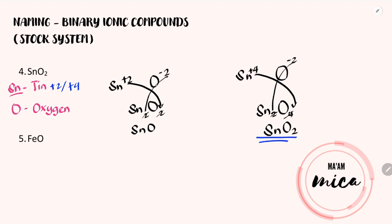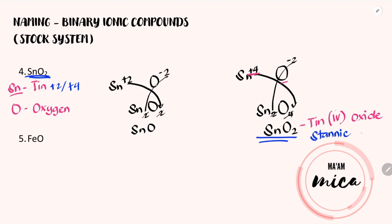Now that we have identified the charge being used by tin in the given chemical formula, we can write its chemical name. It is tin(IV). The Roman numeral represents the charge being used by tin. In naming the second element, we will use the suffix -IDE. Therefore, instead of oxygen, it will be oxide. So the name of this chemical formula is tin(IV) oxide. It can also be written as stannic oxide.